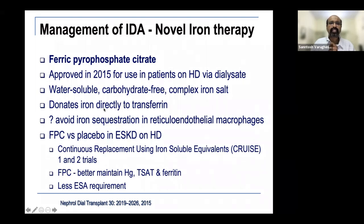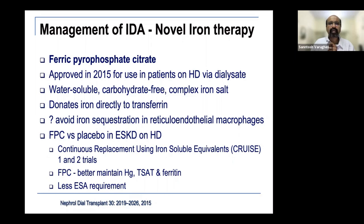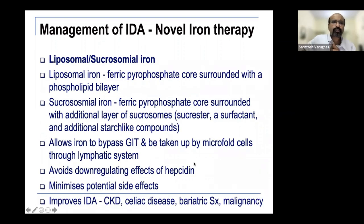Ferric pyrophosphate citrate was approved to be given via the dialysate, donating iron directly to transferrin — I have not used it personally, but the studies look impressive. What has been shown is that when given in the dialysate, the requirement for erythropoietin also decreases — confirming the drug works, and without the need for separate administration, it is a treatment option worth considering.